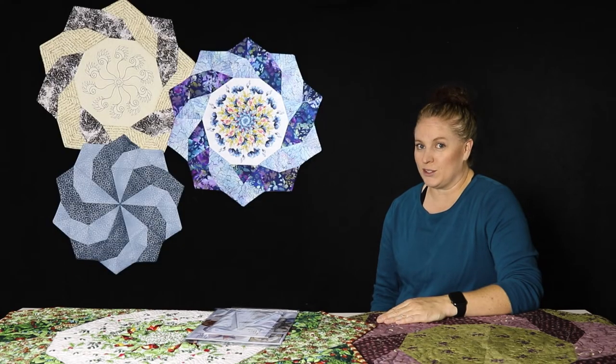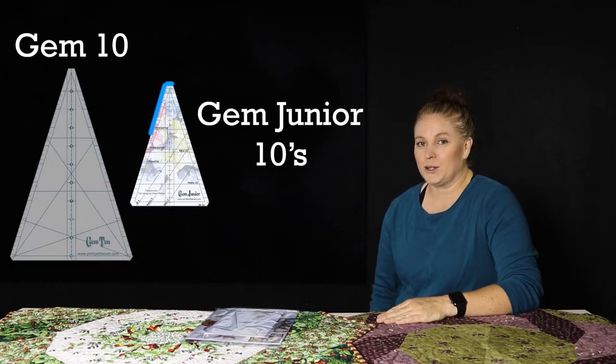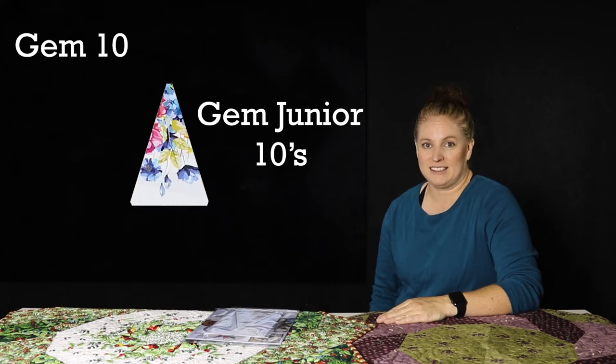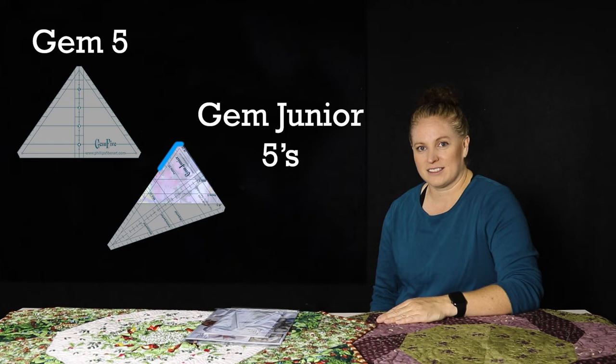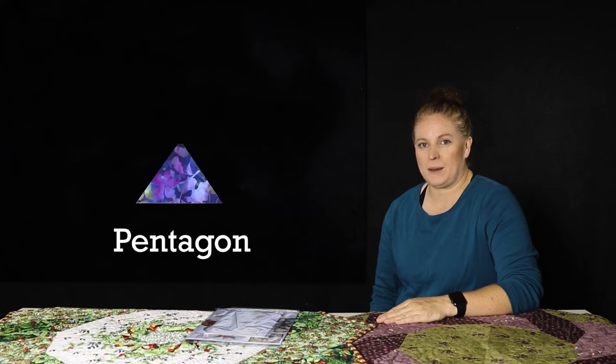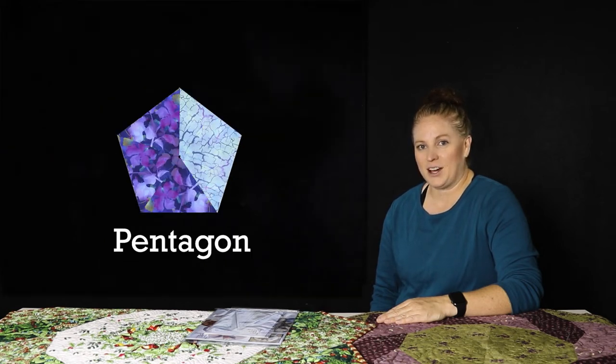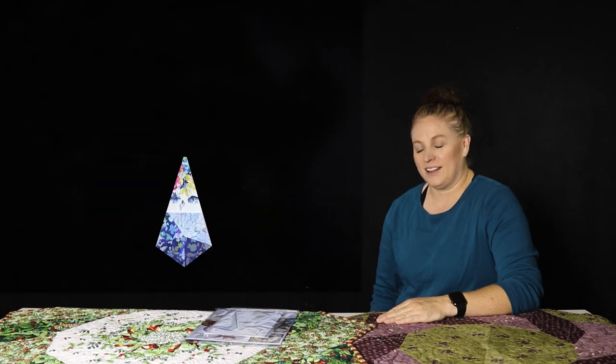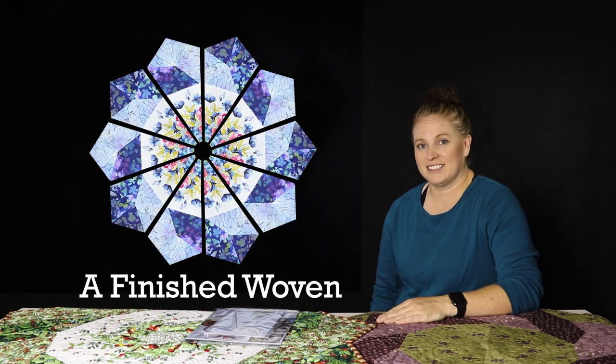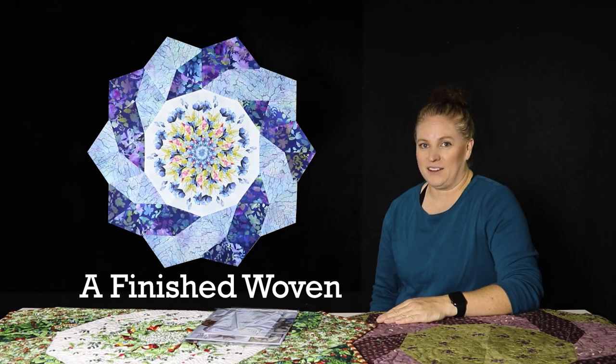You may be wondering how this is made. So let's take a look. First, we're going to start out with our Gem 10. Then we cut some Gem 5s. We're going to sew those into a Pentagon. Now, we connect the two. Now, we'll sew those together. And we have a Finished Woven.